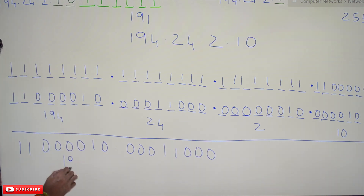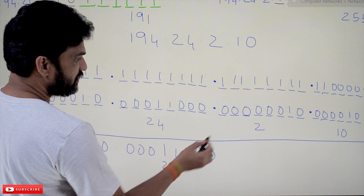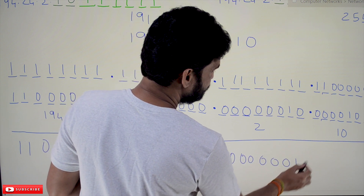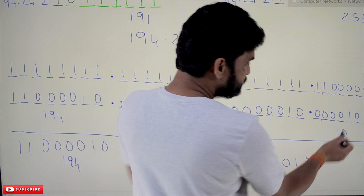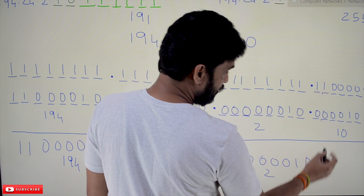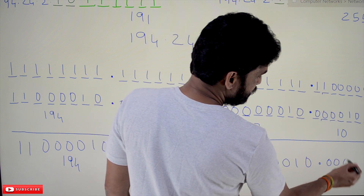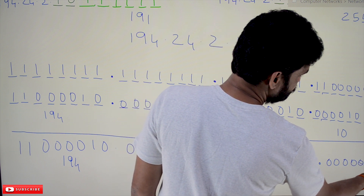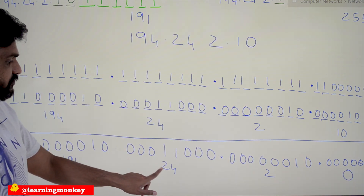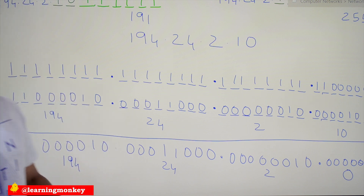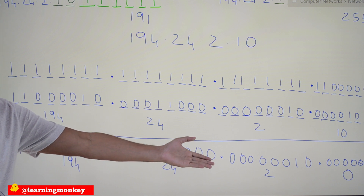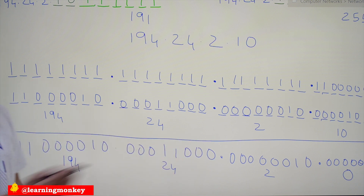For example, the binary value of the third octet is 00000010, which is 2. After performing the AND operation — where ones in the mask preserve the bits and zeros produce zeros — the output is 192.24.2.0. That is the network ID. Using this network ID, the packet will be transmitted to the correct network.